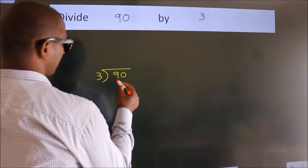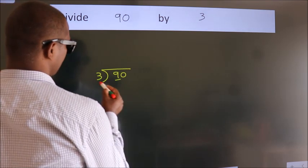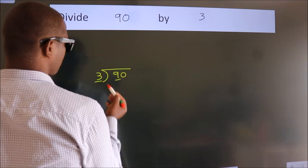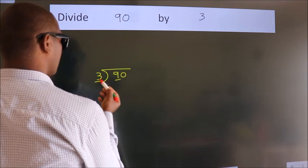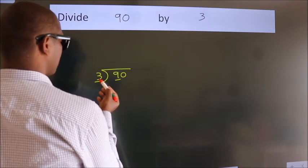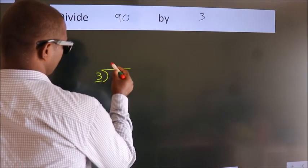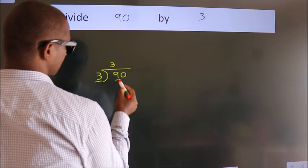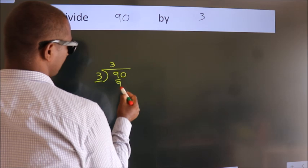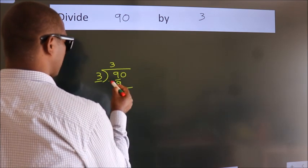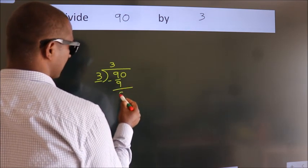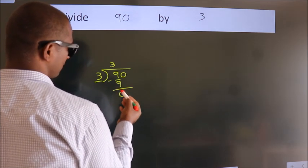Here we have 9, here 3. When do we get 9 in the 3 table? 3 times 3 is 9. Now we should subtract. We get 0.